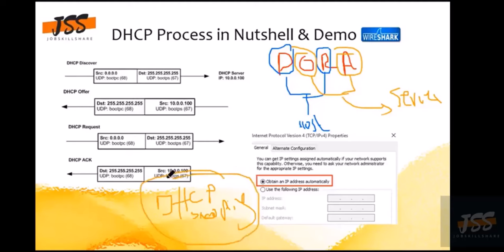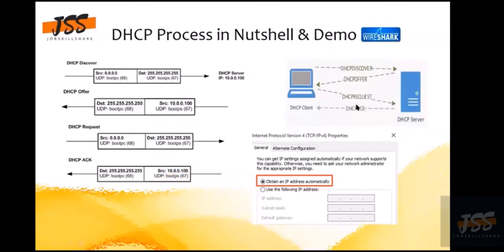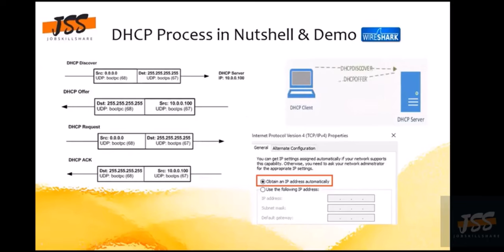DHCP snooping is a security technique to avoid rogue DHCP servers. The animation shows the full process: Discover is sent, Offer is received, then Request, and finally Acknowledgement. The DHCP client then receives the IP address along with other information like DNS server address and default gateway.